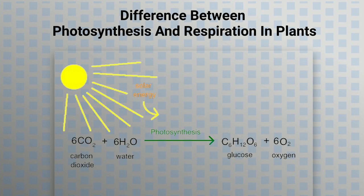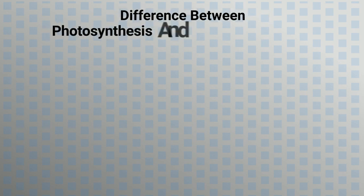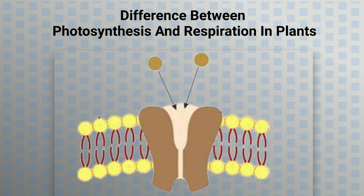5. In photosynthesis, the energy is in the form of glucose molecules, while it is turned into adenosine triphosphate, ATP molecules, in respiration.